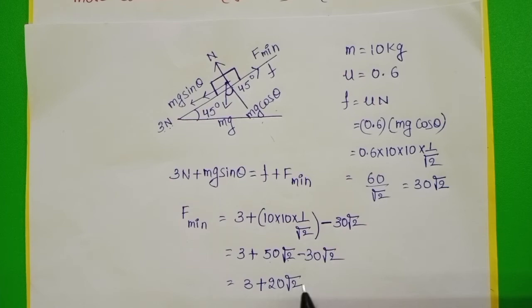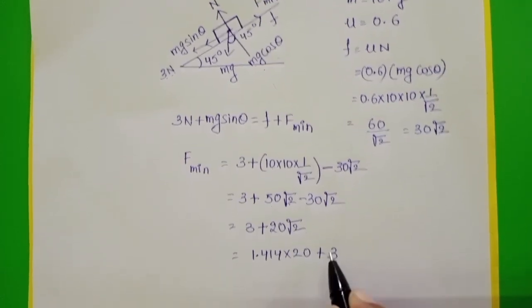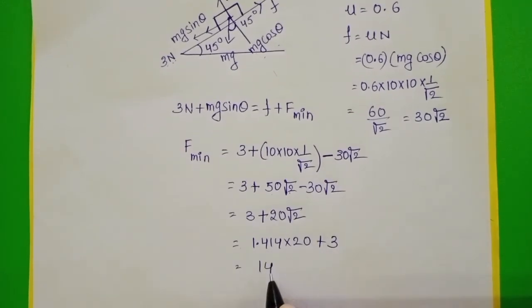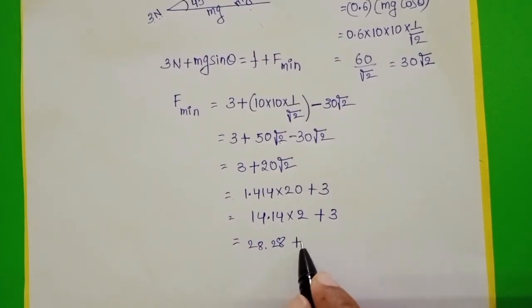20 root 2. Root 2 value 1.414 into 20 plus 3. 14.14 into 2 plus 3 N, 21.13. 1.142 into 21.13, 28.48, 21.28 N.